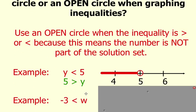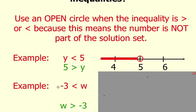Let's look at the other example here. Negative 3 is less than w. Another way to express this inequality is to say w is greater than negative 3.